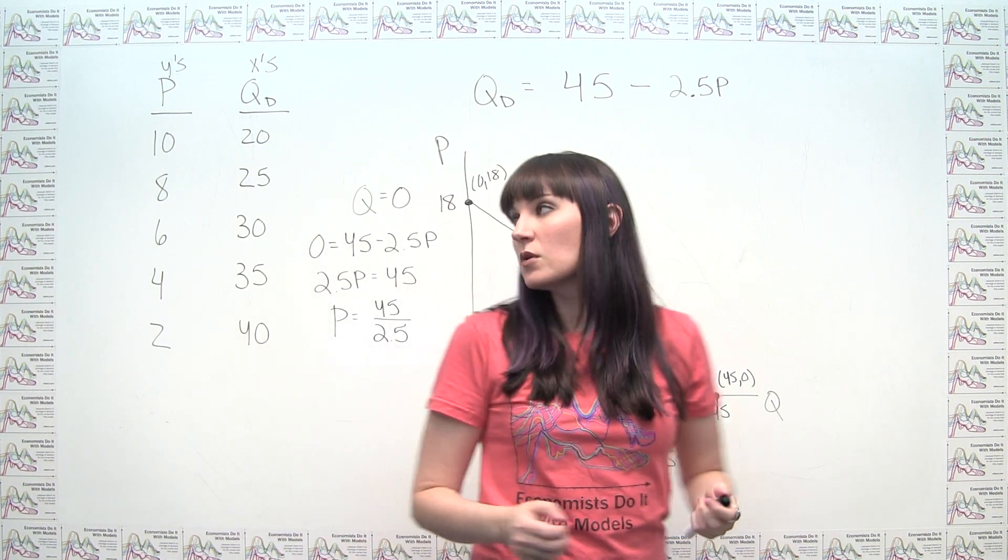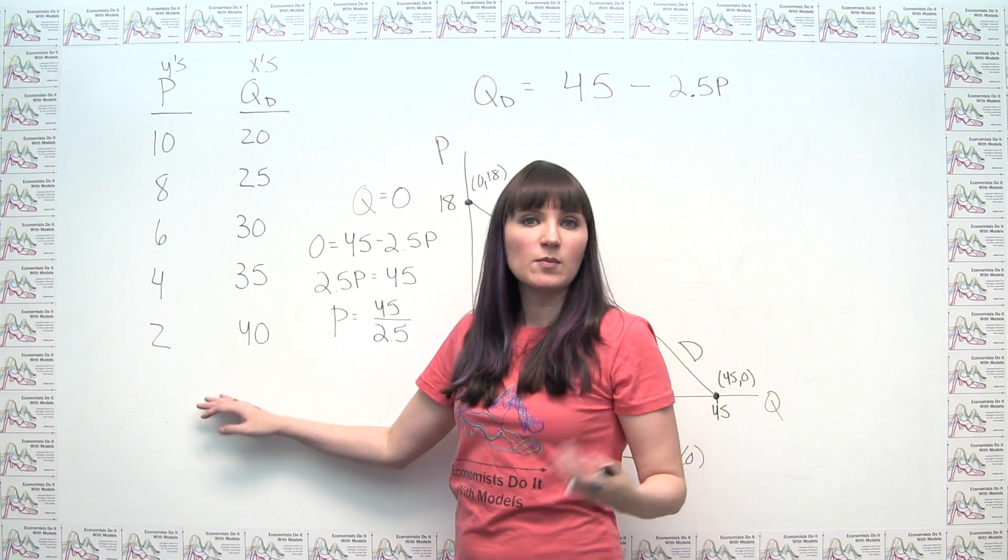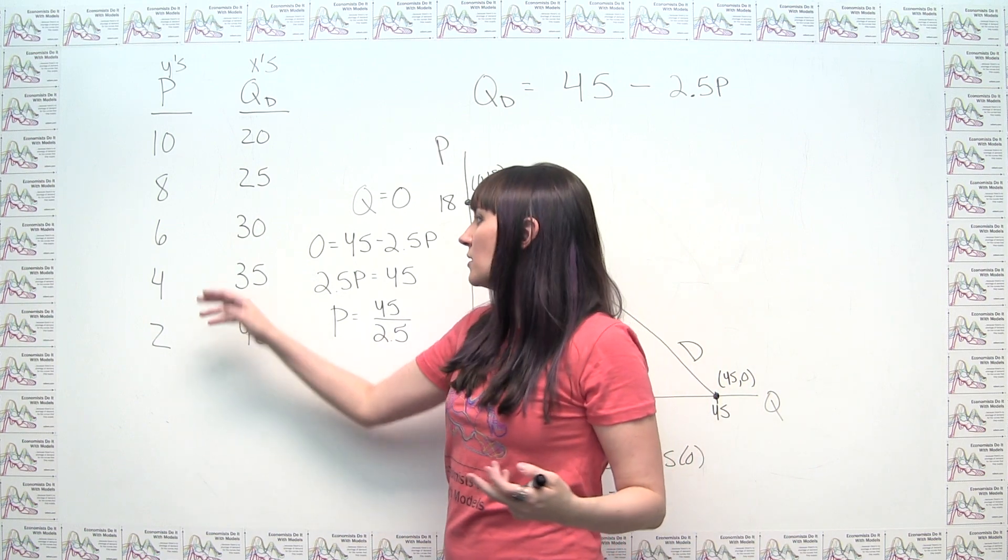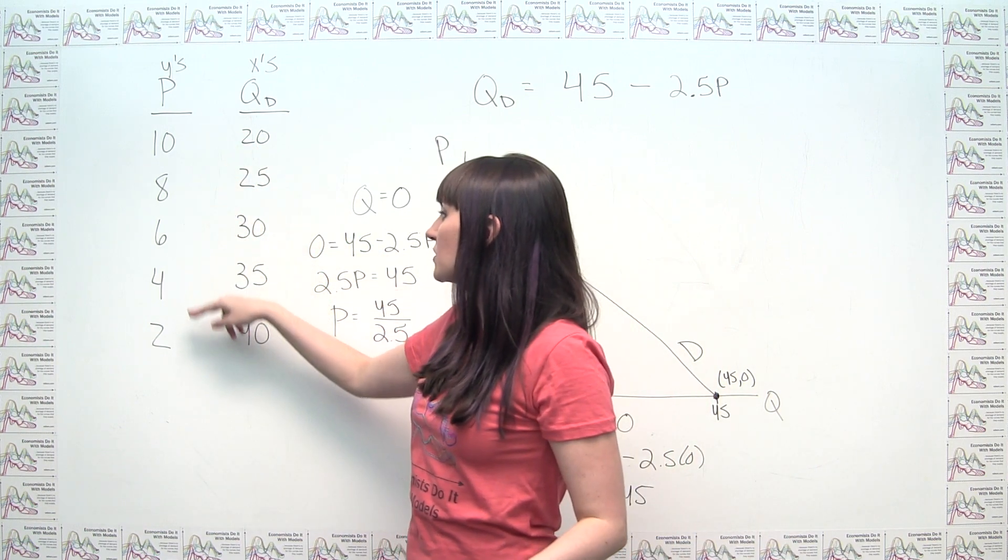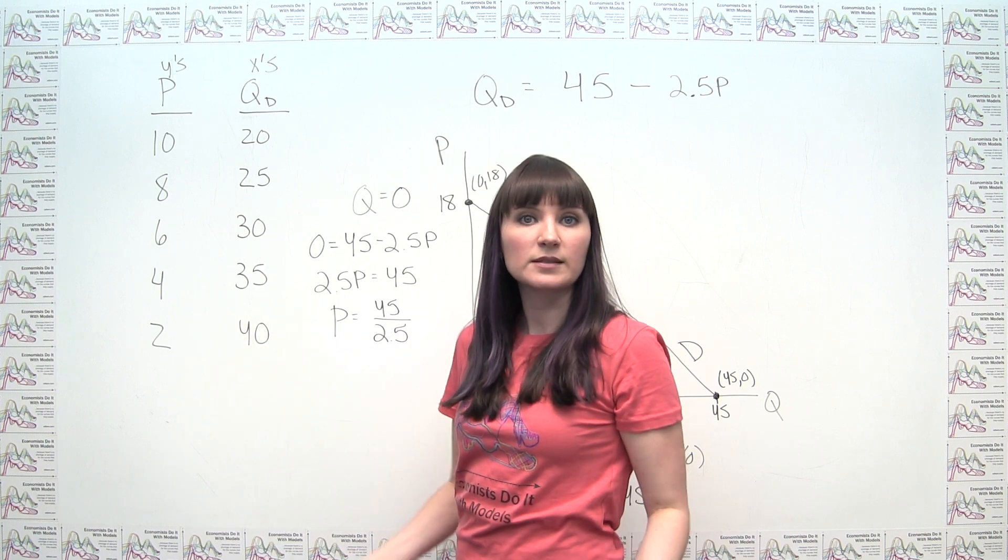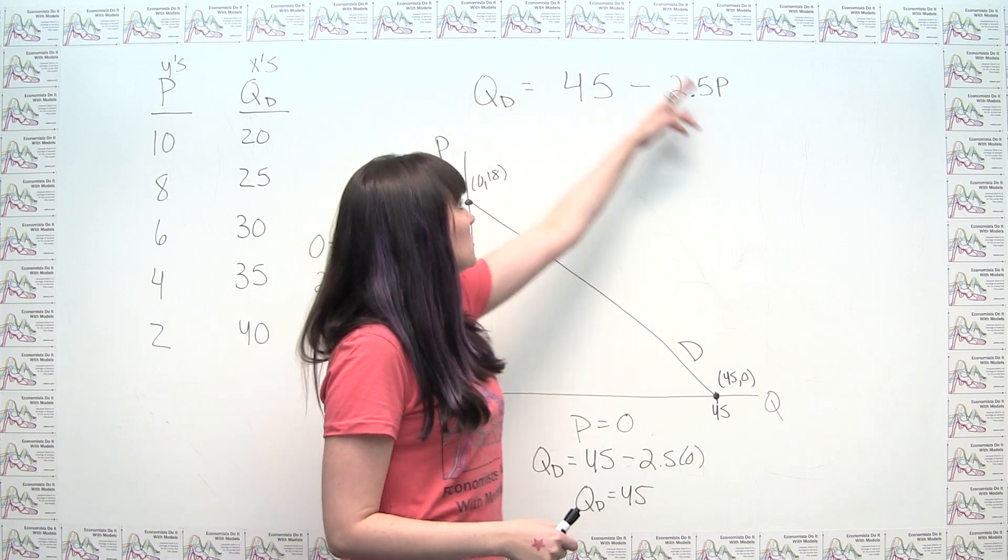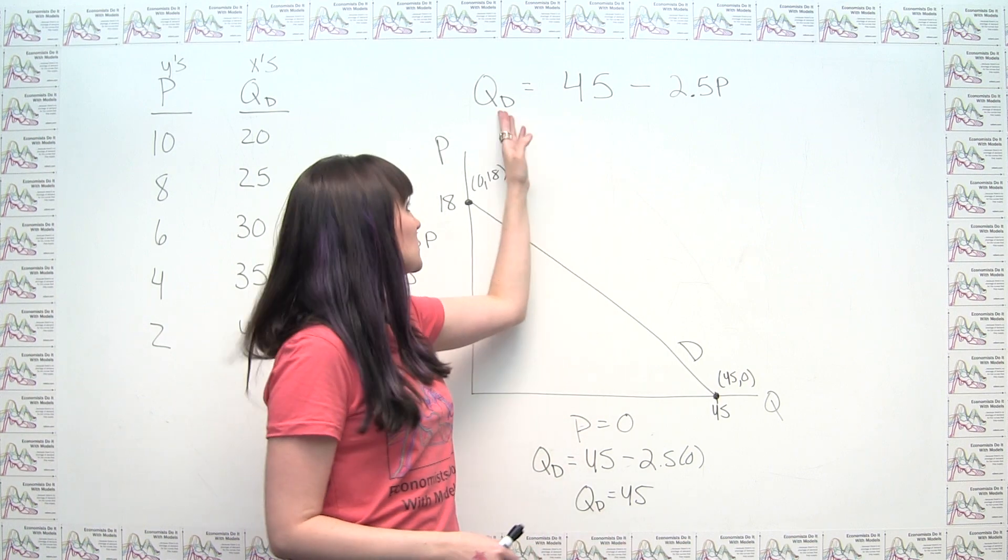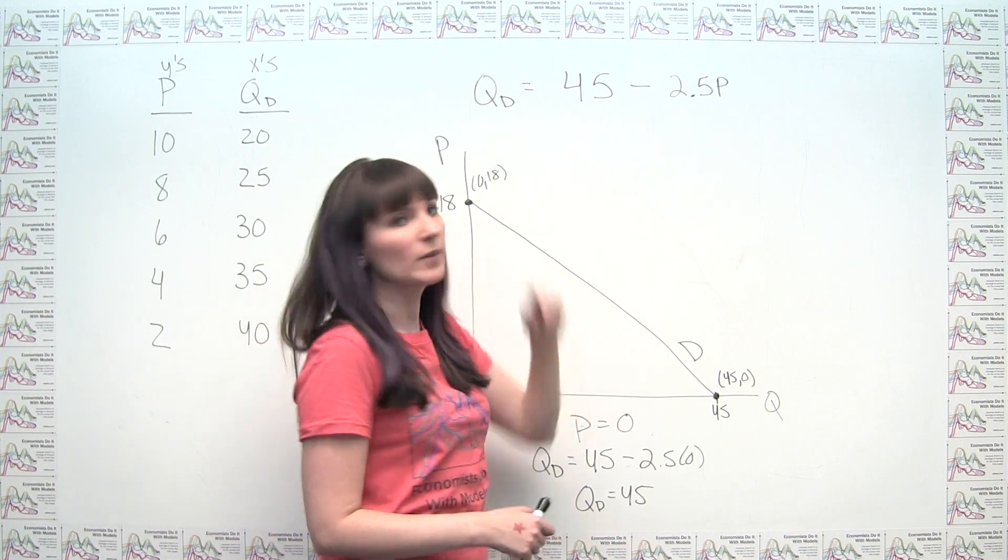So what I just gave you was two different ways that you can come up with a demand curve. You can either have a set of price-quantity pairs given to you in a demand schedule, or you can have an algebraic equation that explicitly relates price to quantity demanded.